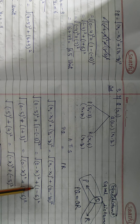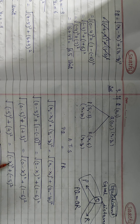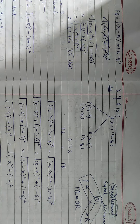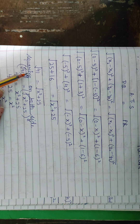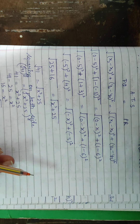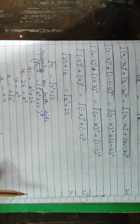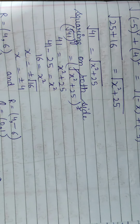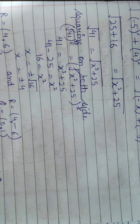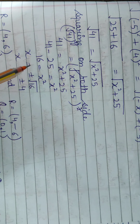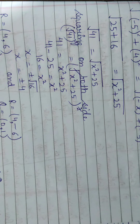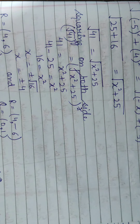For QR: x2 = 0, x1 = x, so 0 minus x whole square. y2 = 1, y1 = 6, so 1 minus 6 whole square. 0 - x = -x, so (-x)² = x². 1 - 6 = -5, so (-5)² = 25. Setting QR = QP: x² + 25 = 41, therefore x² = 16. Taking square root, x = ±4.